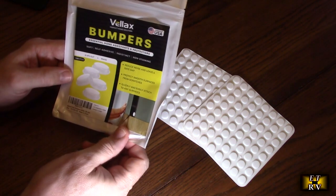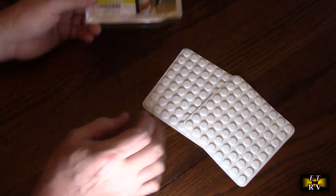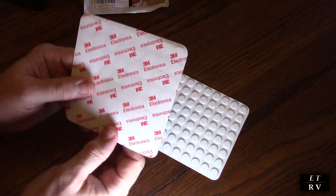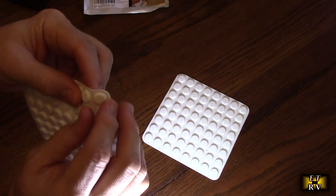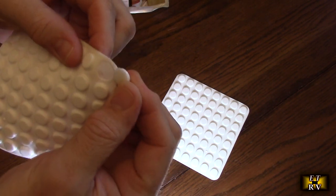You get a whole stack of these with 128 of them. Let's take a look. Right here on the back, it's 3M electronics, so you know it's got high-quality adhesive on there. These just get removed like that. Let's do a close-up so you can see what they look like.